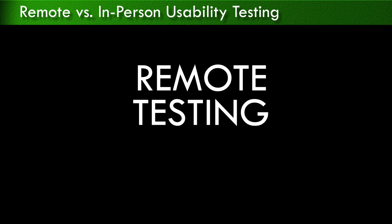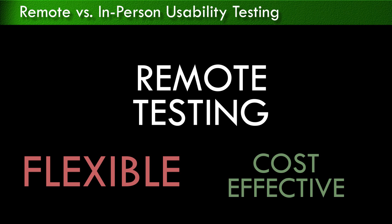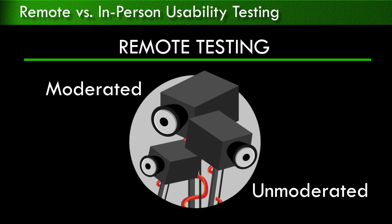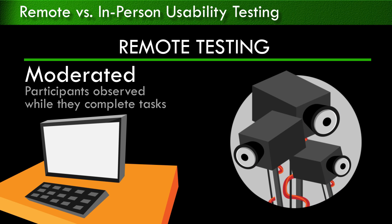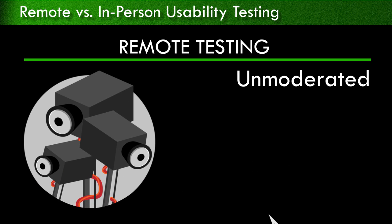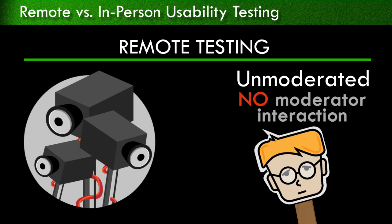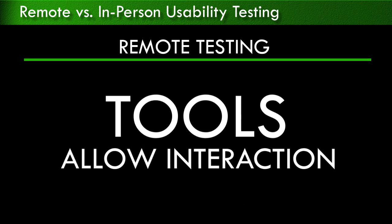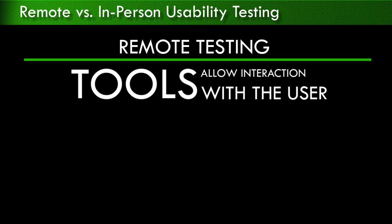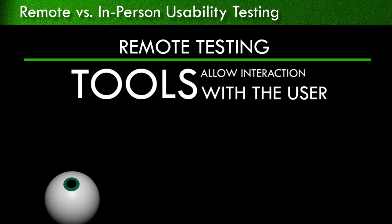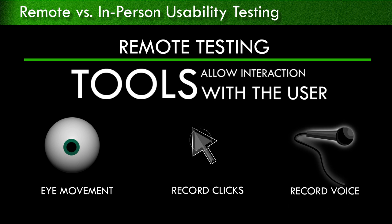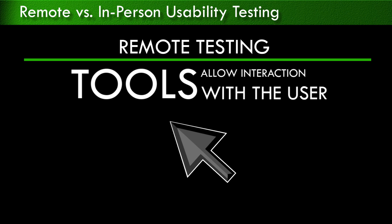Remote testing is a more flexible and cost-effective alternative to in-person testing. The tools include moderated and unmoderated tests. During a moderated remote test, the participants are observed while they complete the tasks. In an unmoderated test, the participants complete the test without any moderator interaction. Some remote tools allow interaction with the user, much like during in-person testing. The remote testing options track eye movement, record users' clicks when they navigate a website or mobile application, record a user's voice, and some tools even track the cursor's path and the time it remains stationary.